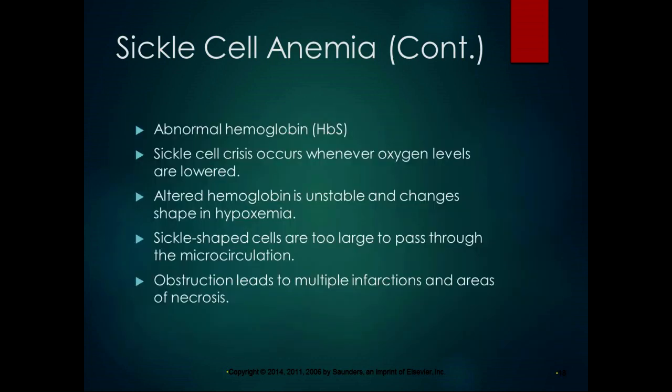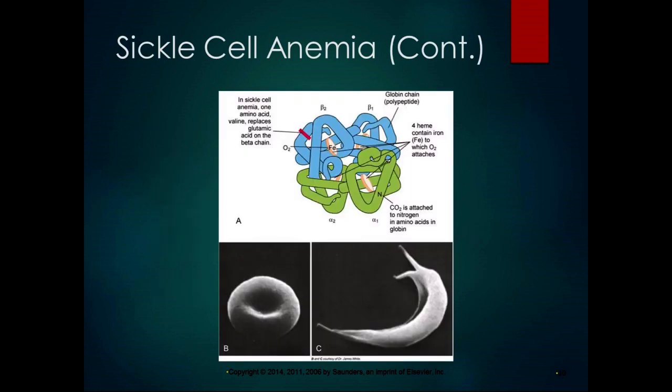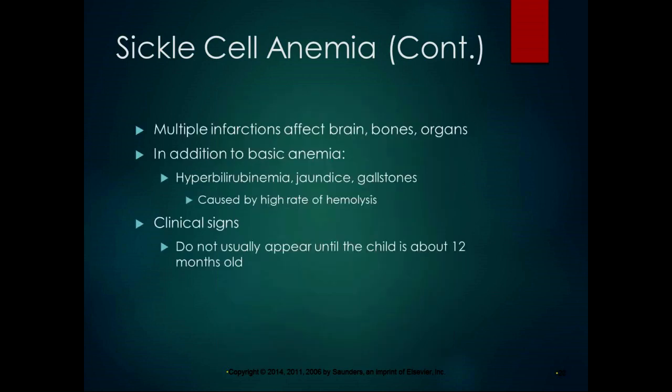Sickle cell anemia causes abnormal hemoglobin. A sickle cell crisis occurs whenever oxygen levels are lowered — the altered hemoglobin is unstable and changes shape in hypoxemia. The sickle-shaped cells are too large to pass through the microcirculation, and obstruction leads to multiple infarctions in areas of necrosis — a sickle cell crisis can be life-threatening. Patients can have multiple infarctions affecting the brain, bones, and organs, as well as hyperbilirubinemia, jaundice, and gallstones caused by a high rate of hemolysis.